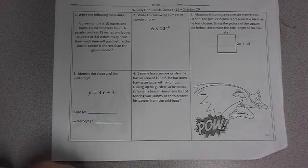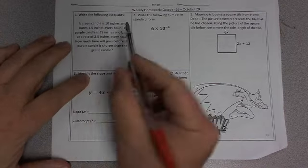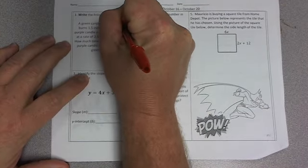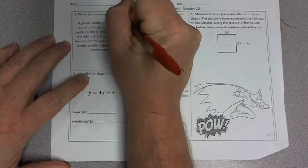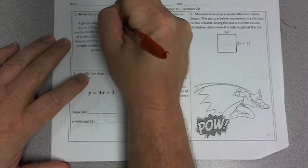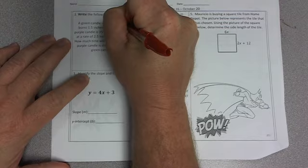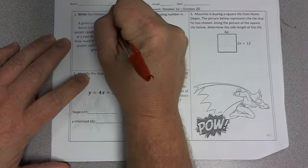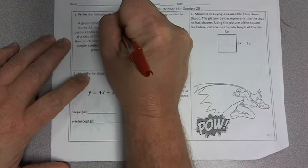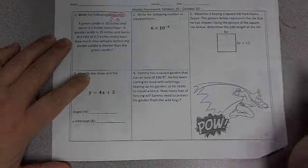Okay, let's take a look at Monday, October 16th's homework, starting with number one. Write the following inequality. The word inequality means we're going to write a math sentence that has either a greater than, less than symbol, or greater than or equal to, or less than or equal to symbol.